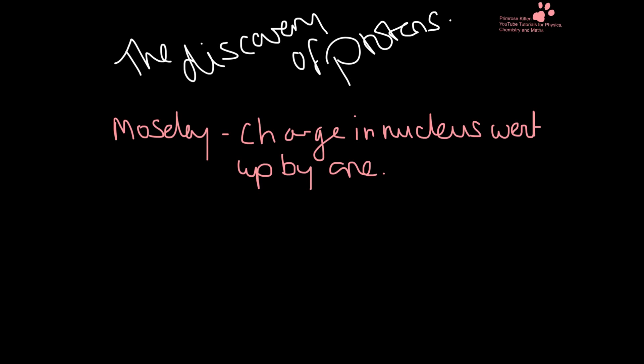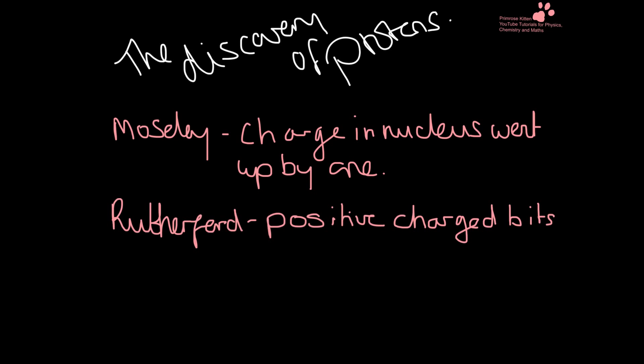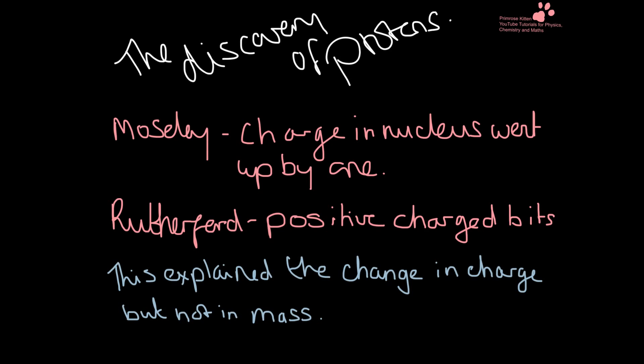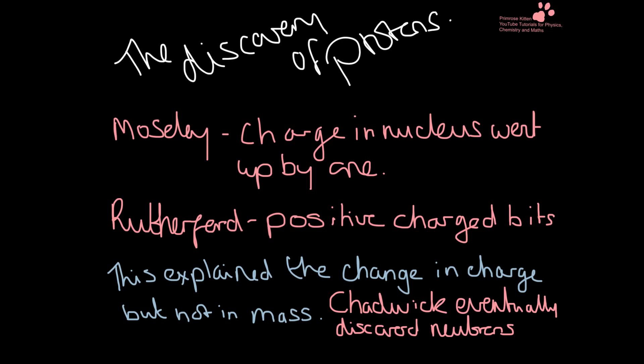There were a few additions and modifications to Rutherford's model. Moseley discovered that the charge in the nucleus went up by one for each element. Rutherford then discovered protons — the positively charged bits in the nucleus — which explained the change in charge. But it didn't explain the change in mass, which confused people for a while until James Chadwick eventually discovered neutrons.